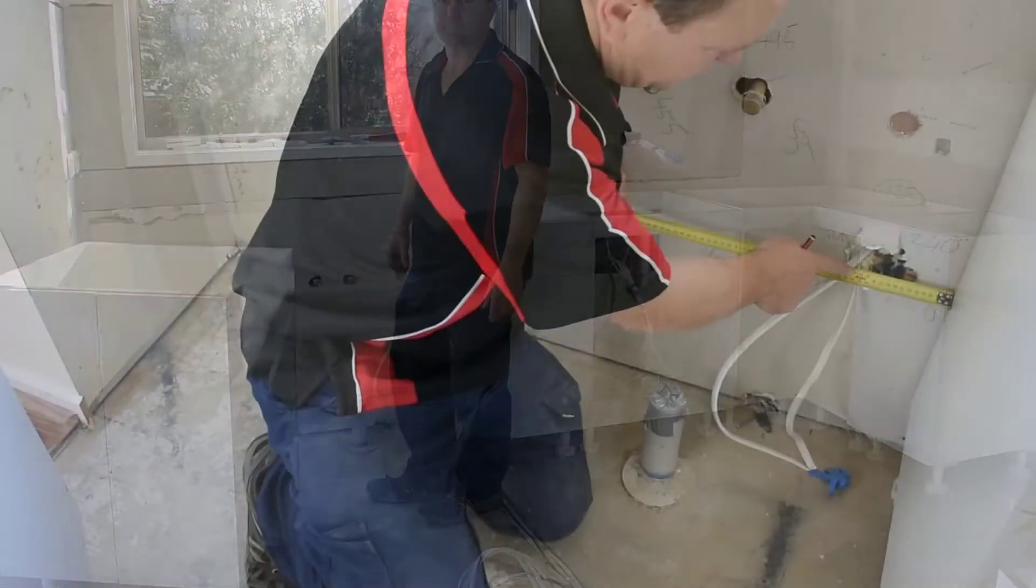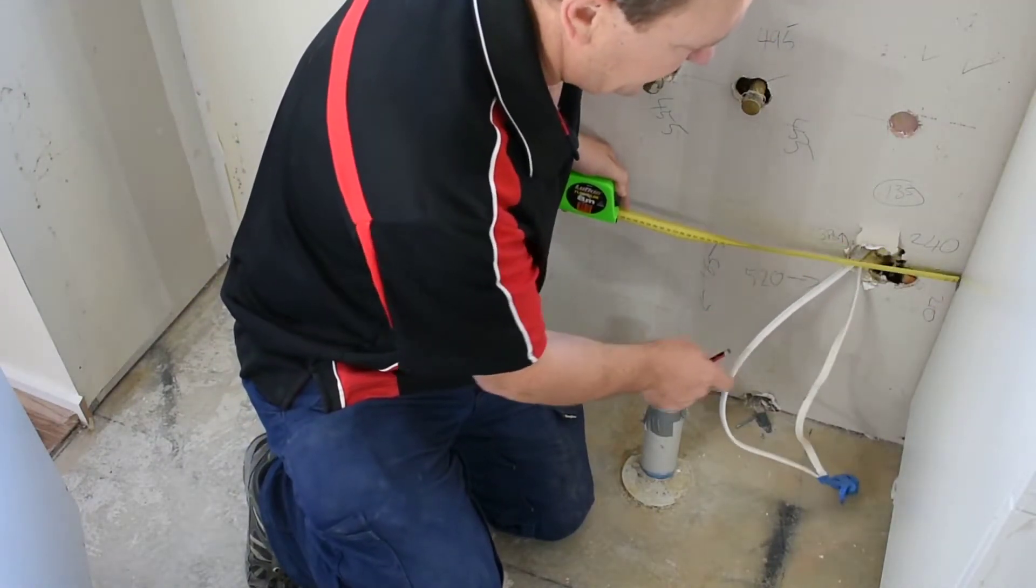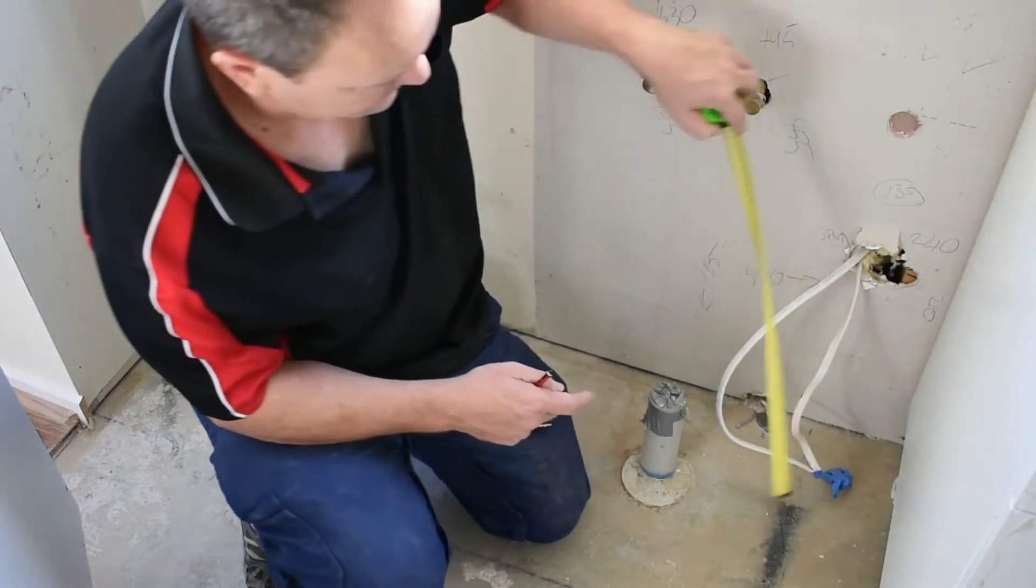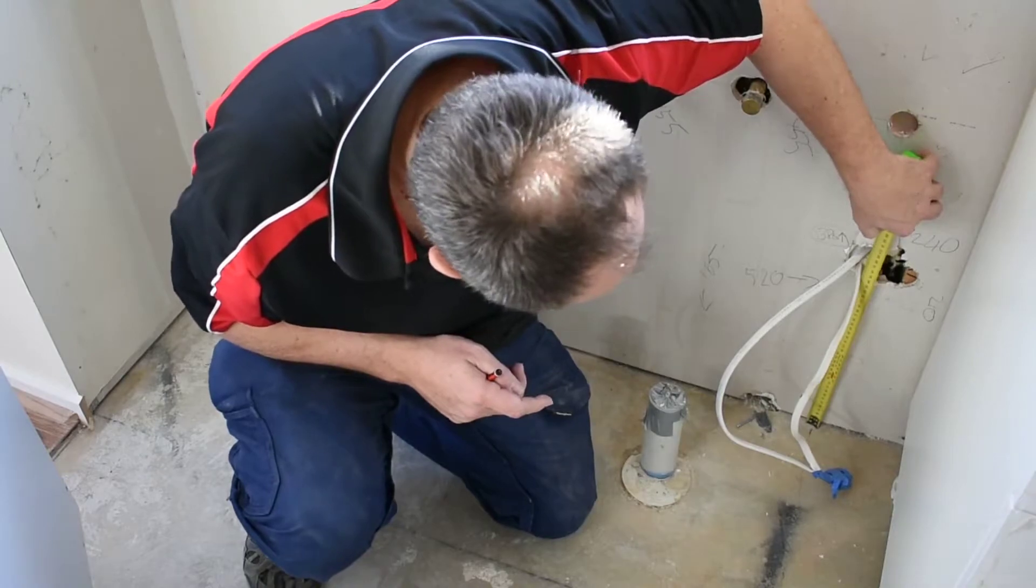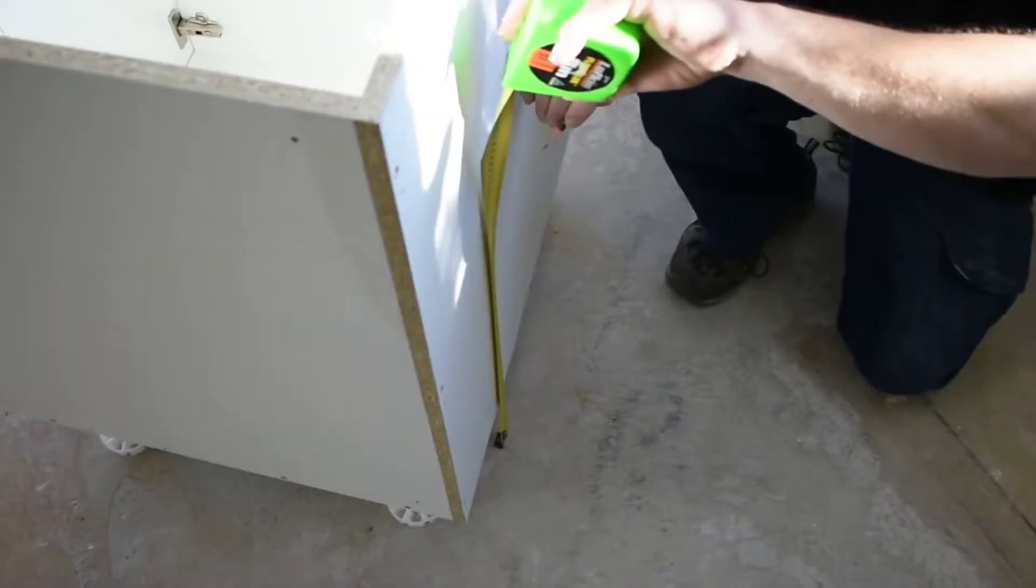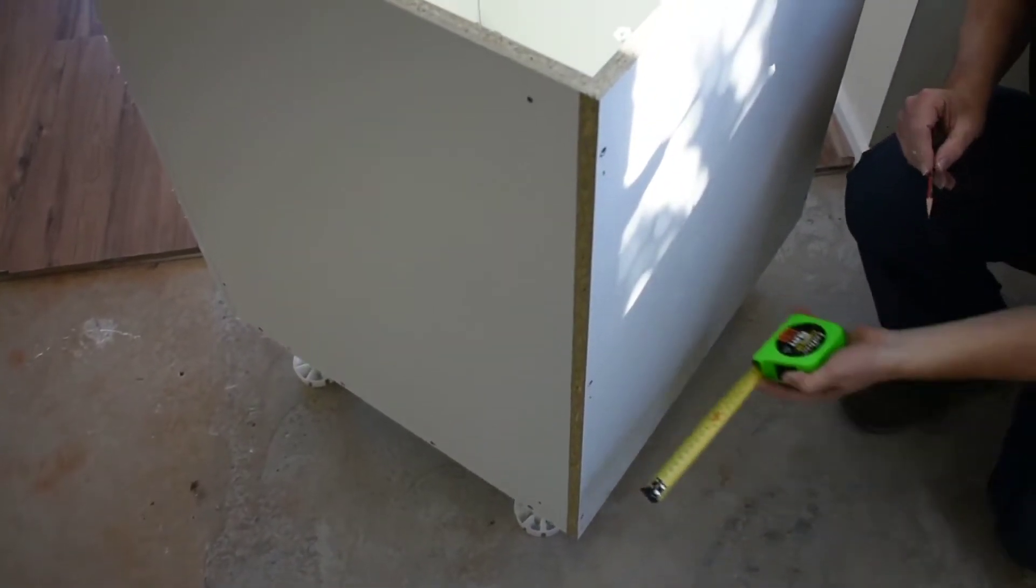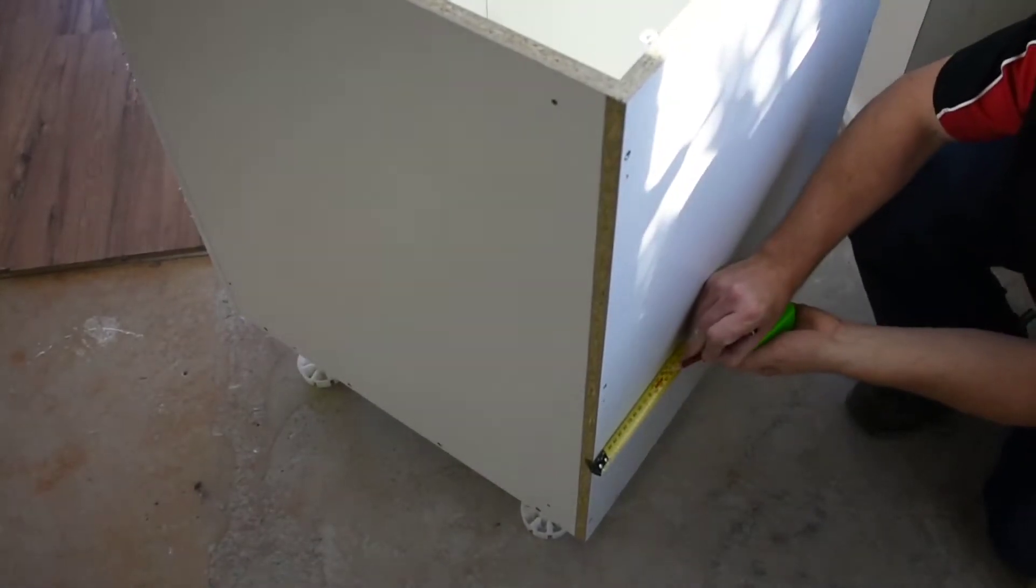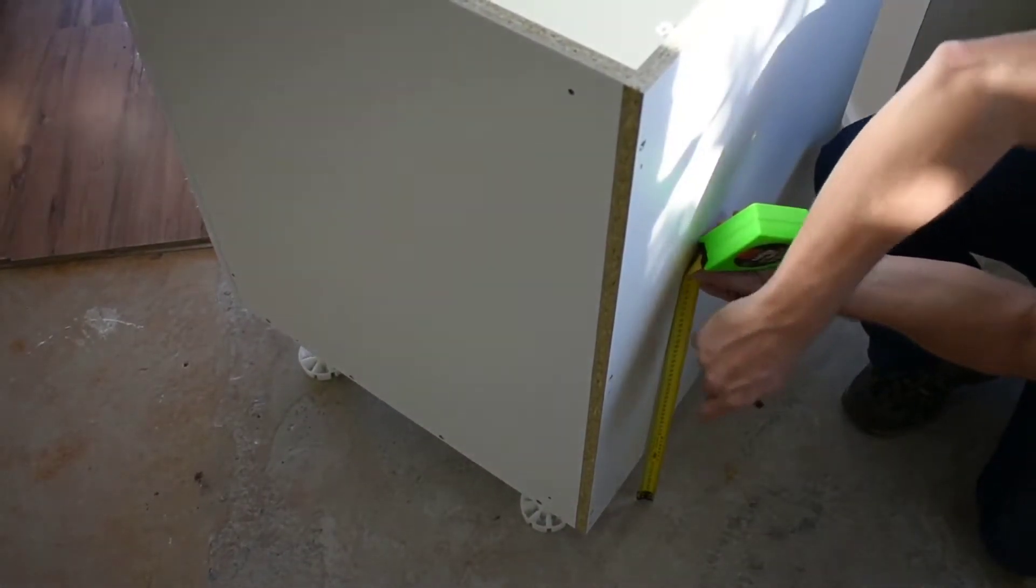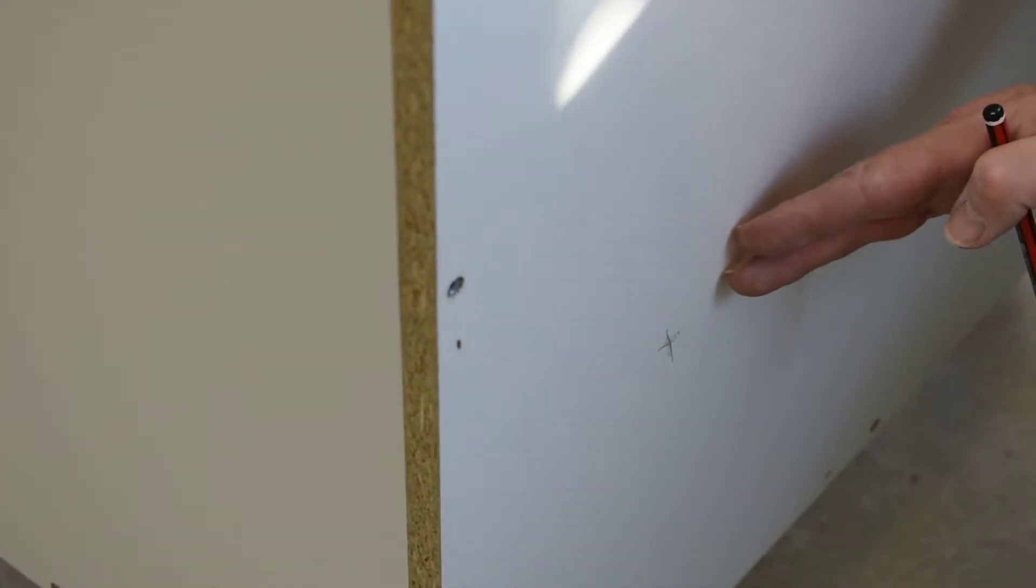For electrical outlets, I'm just going to mark out where the power point comes in for the dishwasher. So I've got 135mm and I've got 370mm, so I just transfer those onto my cupboard. This one here is my first hole and this is the dishwasher power point hole.